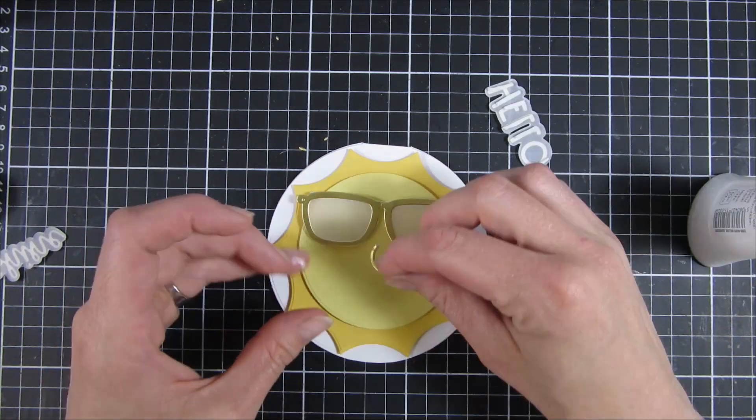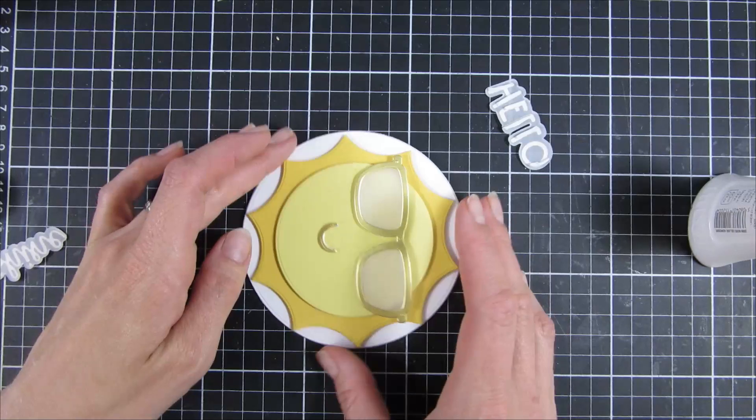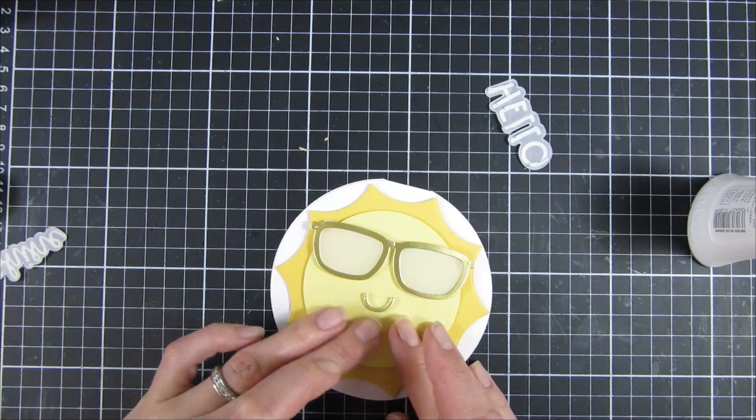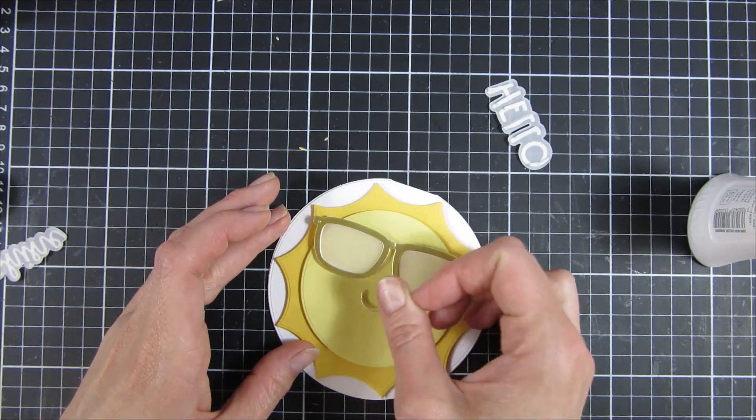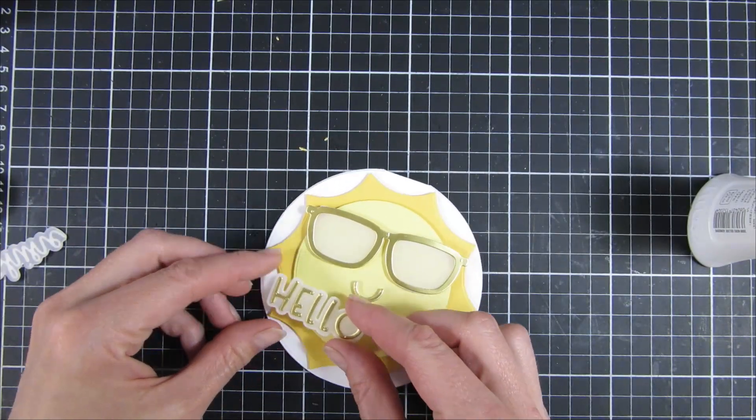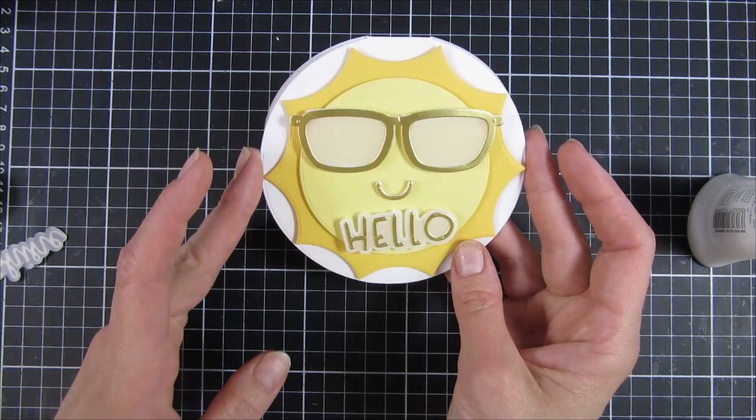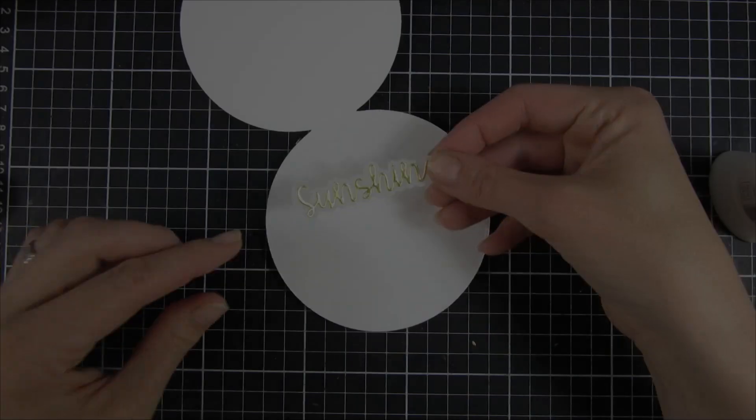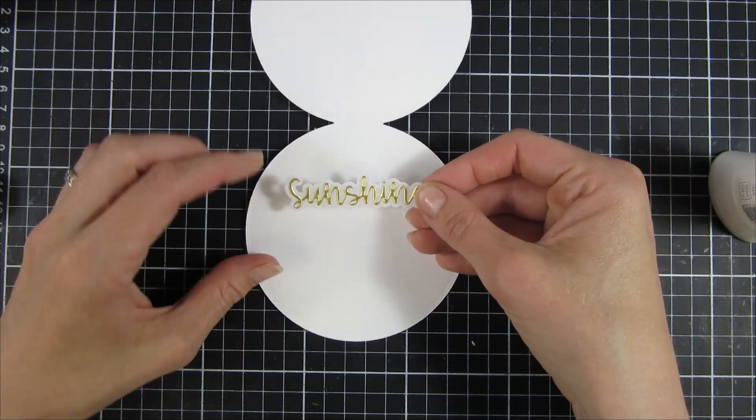Now I'm just adhering my mouth down and you can see how cute that is. I just love it. Then I go for my sentiment right in the middle there, and then we have the sunshine on the inside.